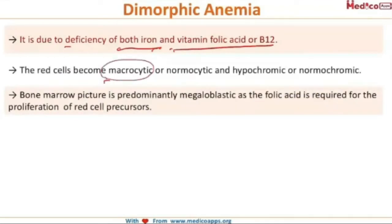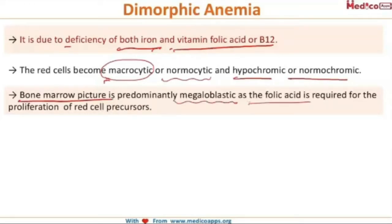The bone marrow picture is predominantly of the megaloblastic type. This is because folic acid deficiency occurs in dimorphic anemia, and folic acid is required for the proliferation of the red cell precursors. In the absence of folic acid, there will be a megaloblastic picture in the bone marrow.